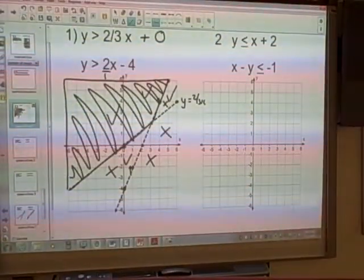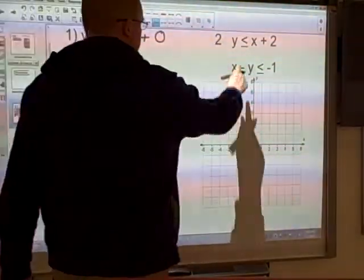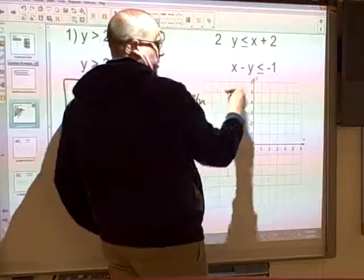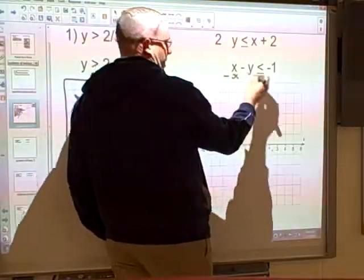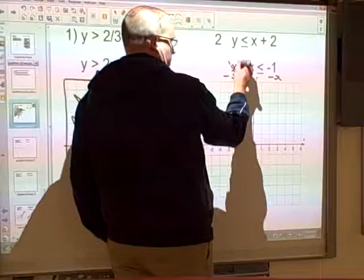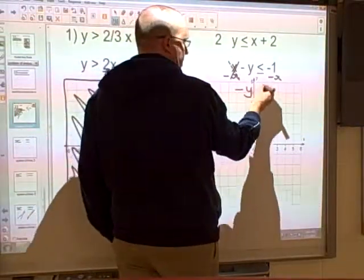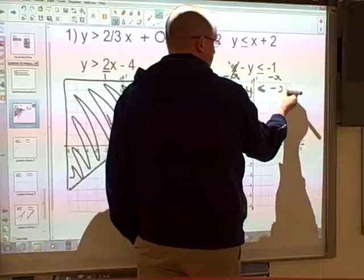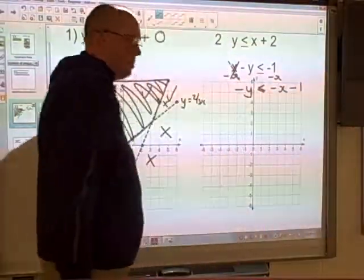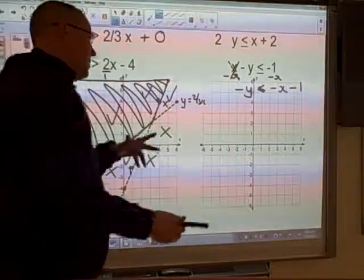Now I'm going to do question 2 as well. And the first one's okay because we're in slope-intercept. This one's not, so I'm going to rearrange this. So I'm going to subtract x from both sides. So that cancels. So now we've got negative y is less than or equal to negative x minus 1. And then we need to divide by negative 1.